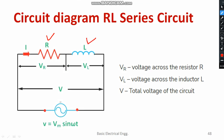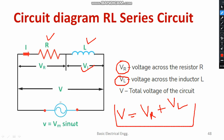Please consider the circuit given below. We have two elements R and L connected in series. The same current flows through both R and L. The RMS voltage across the resistor is represented by VR and the RMS voltage across the inductor is represented by VL. Applying KVL, the total voltage V equals VR plus VL.